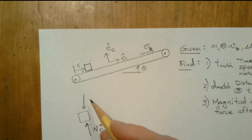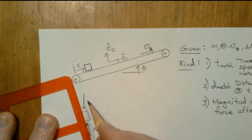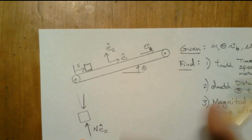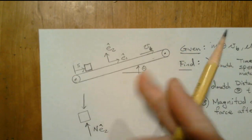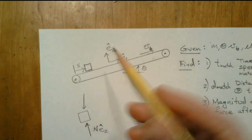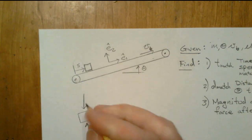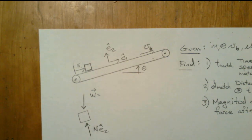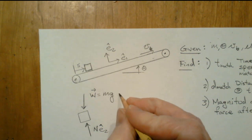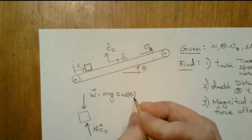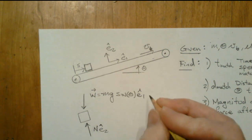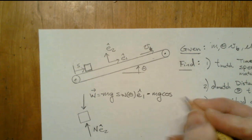It's important to note that weight points straight down. Some students think the weight should be perpendicular to the belt, but it's not — weight is straight down. Which means a portion of it is going to be in the minus e-hat-1 direction and a portion in the minus e-hat-2 direction. The decomposition: weight has magnitude m times g. A sine-theta component goes into the minus e-hat-1 direction, and minus mg cosine-theta goes in the e-hat-2 direction.